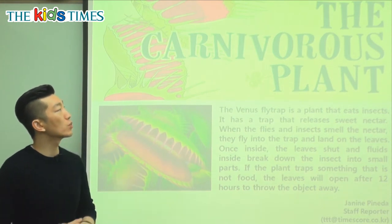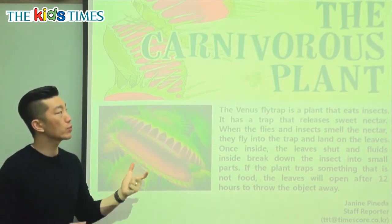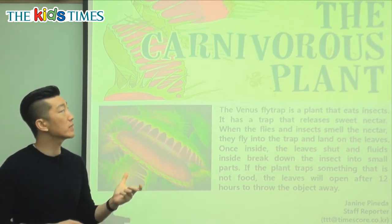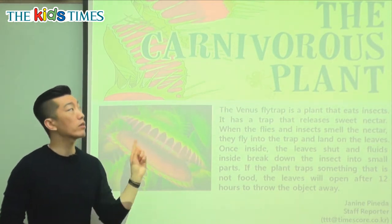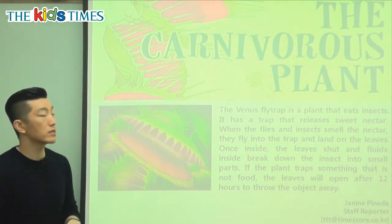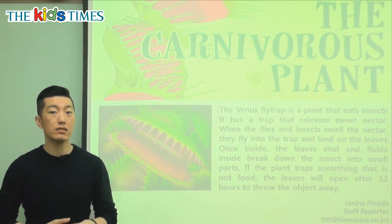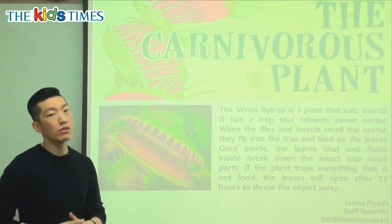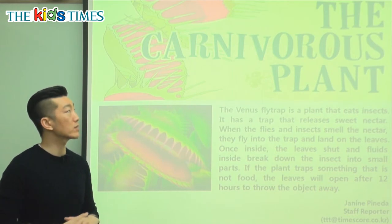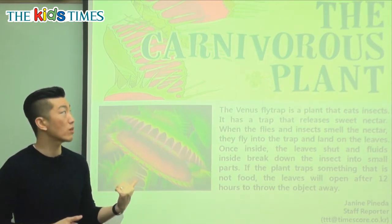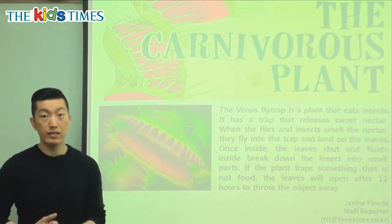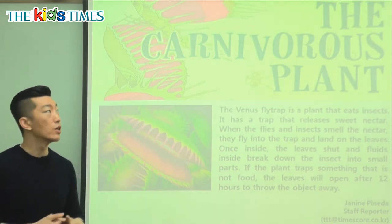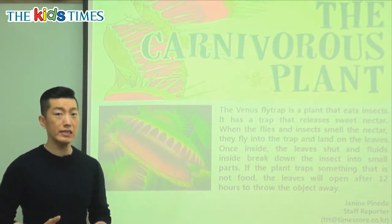If you look at the word carnivorous, we have a root word carnivore. Carnivorous means that of a carnivore, and carnivore means some animal that eats other animals — meat eating. Dinosaurs, many of them like the Tyrannosaurus rex, the T-Rex, was a carnivore. Lions and tigers are carnivores; they only eat meat. So there's a plant that actually eats meat.